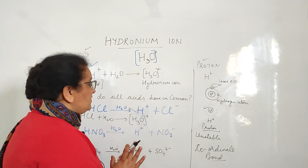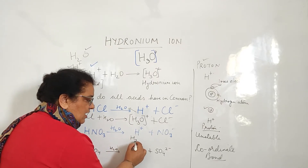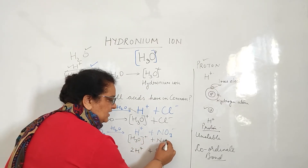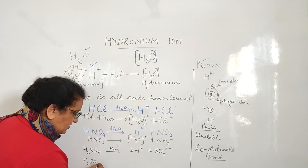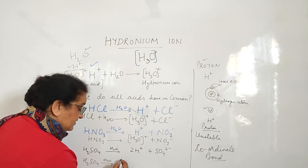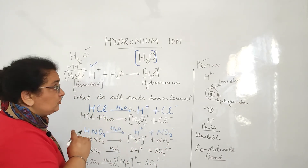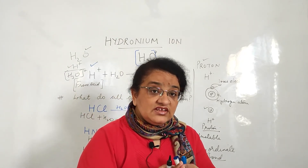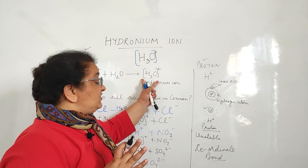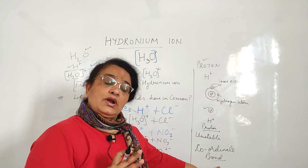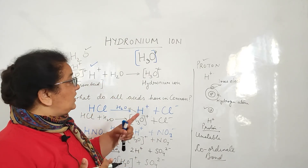H-ion cannot exist alone, so it attaches with water. So: hydronium ion plus chloride ion. In place of H-ion I write hydronium ion plus nitrate ion. I am rewriting this equation because this is actually the correct form. Then sulfuric acid again — rewriting it: with water it gives two hydronium ions plus one sulfate ion. To sum up: the hydronium ion is the H-ion released from acid, attached with a water molecule, joined by a coordinate bond for stability. This also tells us why acids cannot release H-ion in the absence of water — water is needed to hold and attach the H-ion.